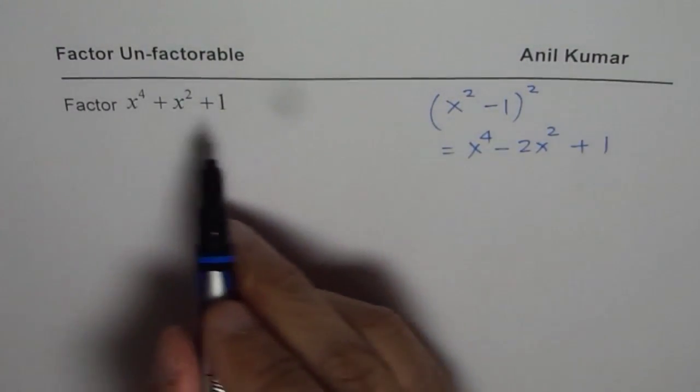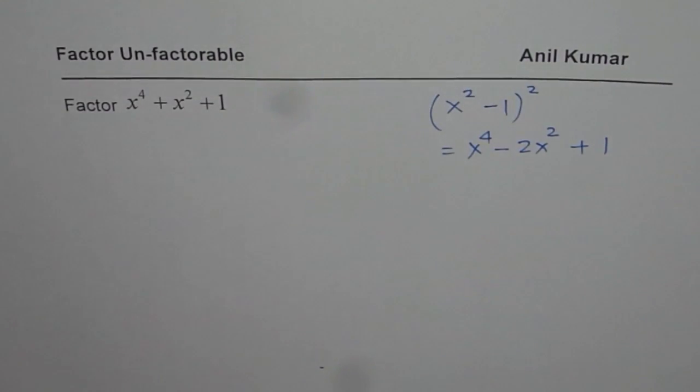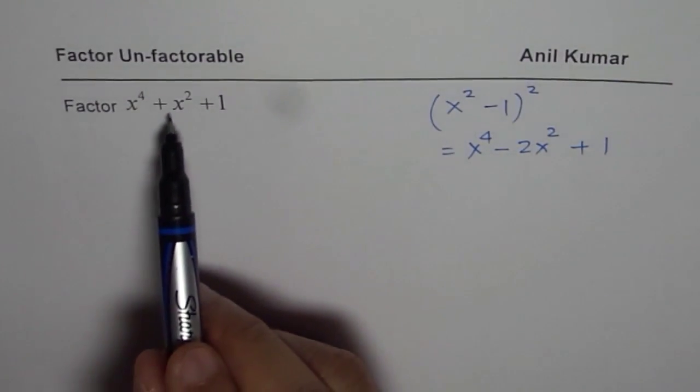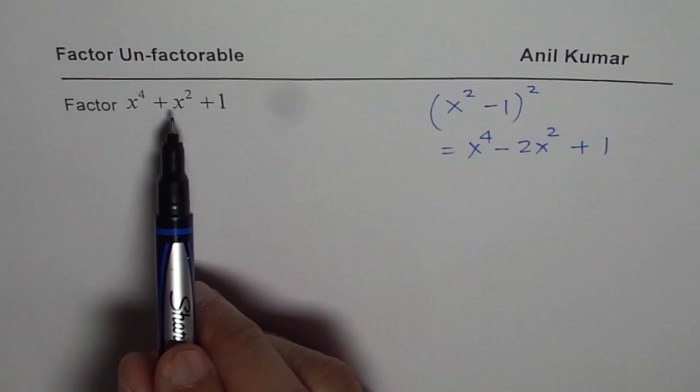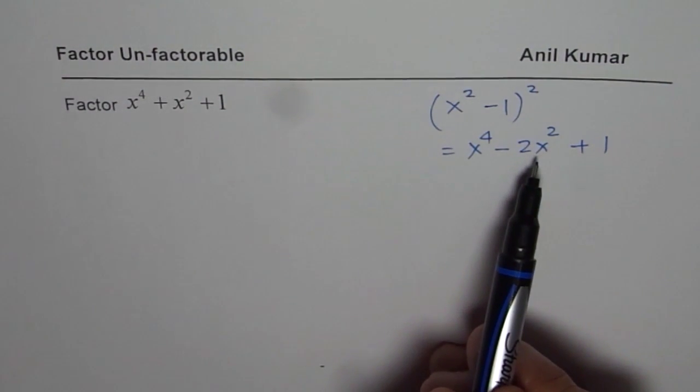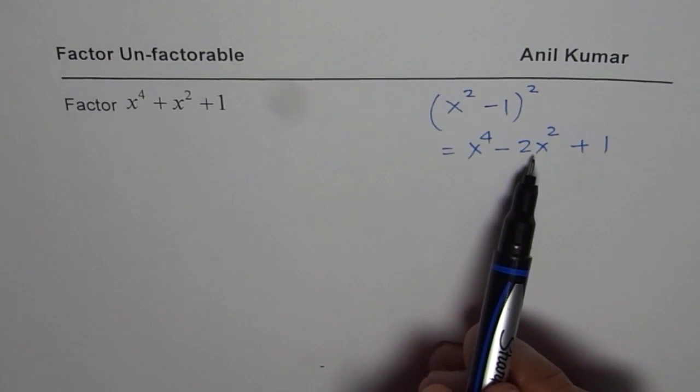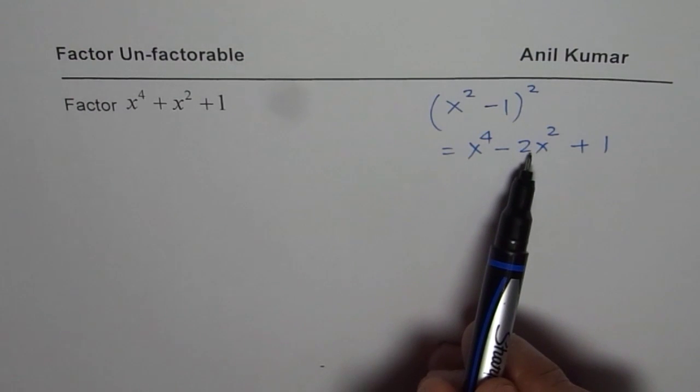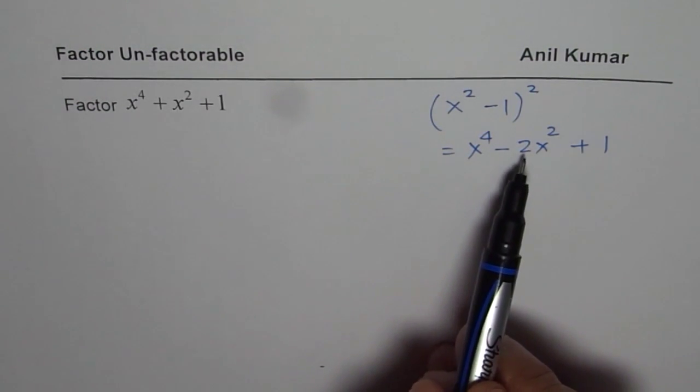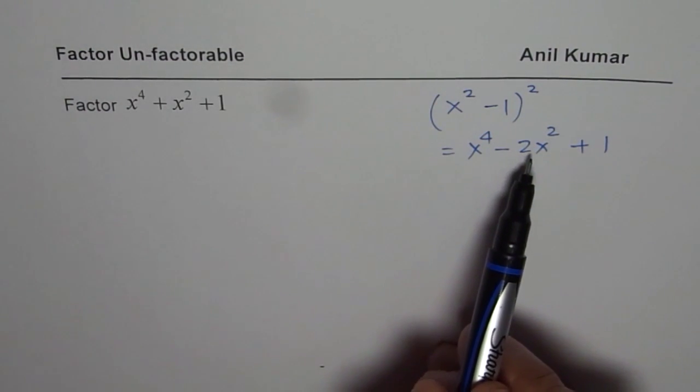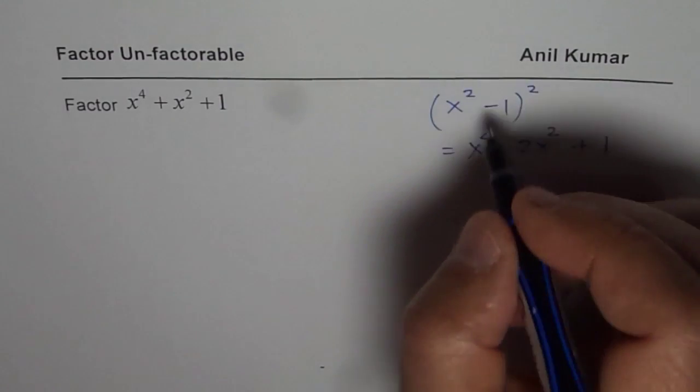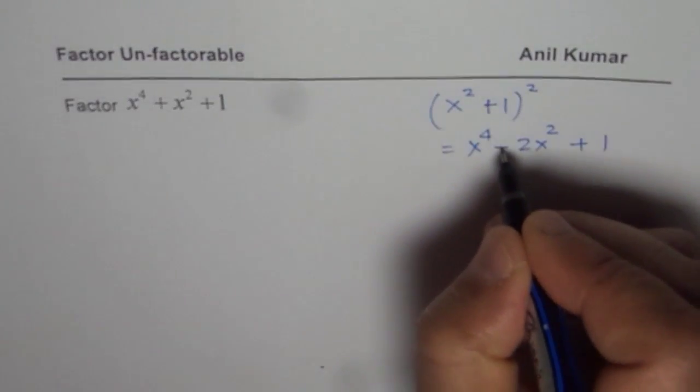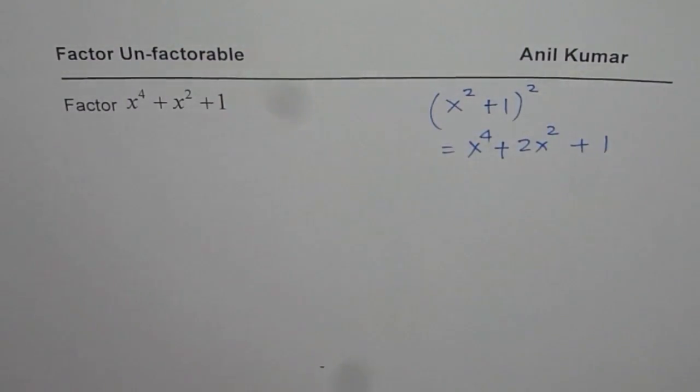Now if I compare with this, I have only x square. I do not have minus 2x square. So to get minus 2x square, I have to add and subtract minus 3x square. But 3x square is not a perfect square. So what we will do is, we will try with x square plus 1. So I am showing you how to come to the right result.